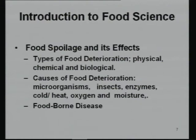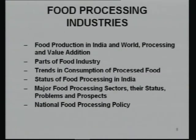How does food spoilage take place — whether physical, chemical, or microbiological? What are the causes of food deterioration: insects, enzymes, oxygen, or moisture? What type of foodborne diseases can occur to human beings when spoilage takes place should also be known to you.